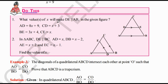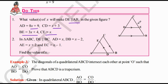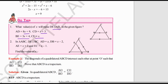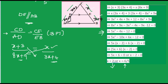First question: what value of x will make DE parallel to AB in the given figure? AD is given as 8x + 9, CD is given as x + 3, BE is given as 3x + 4, and CE is given as x. To find x, we use the Basic Proportionality Theorem. Since DE is parallel to AB, we can write CD/AD = CE/BE as per the Basic Proportionality Theorem.